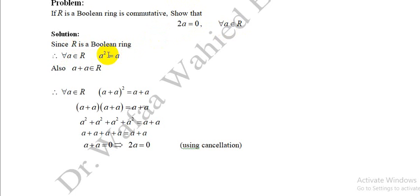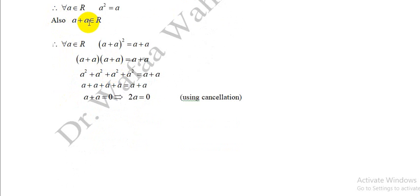Since R is a boolean ring, a² = a for all a ∈ R. Also, by the closure condition, a + a ∈ R. Since a + a ∈ R, it is idempotent, so (a + a)² = a + a. Expanding: (a + a)(a + a) = a + a. Replacing a² by a, we get a + a + a + a = a + a. By the cancellation law for addition, a + a = 0. Since a + a = 2a, we conclude 2a = 0.